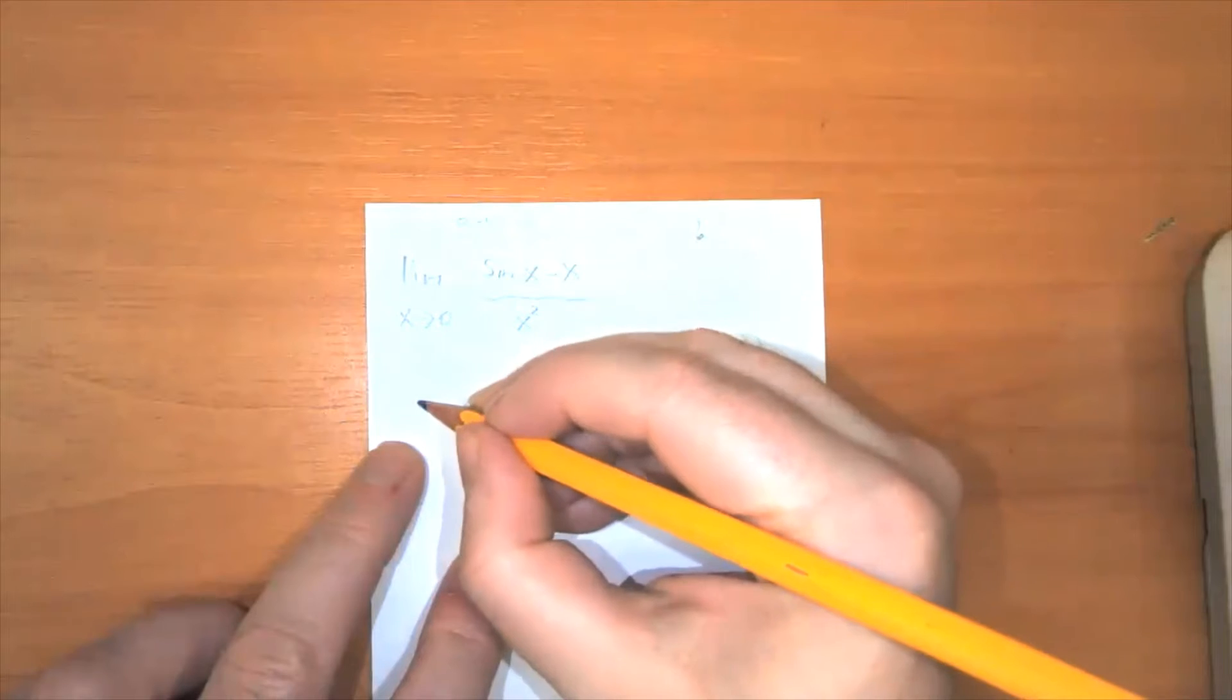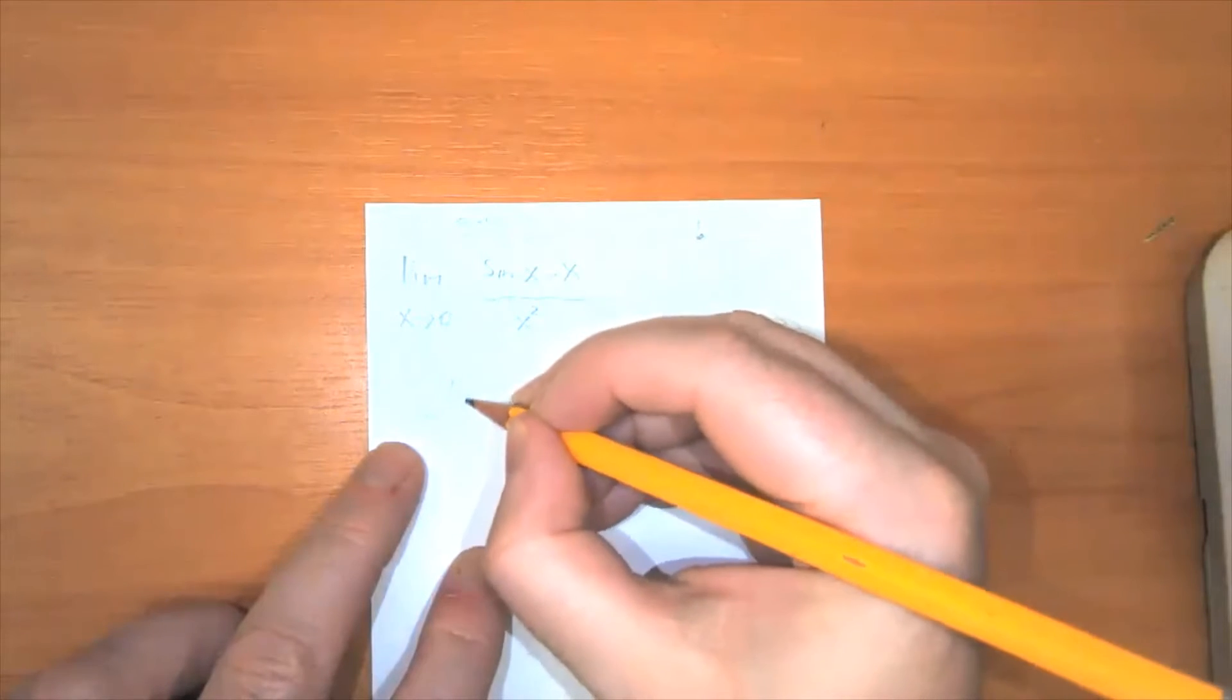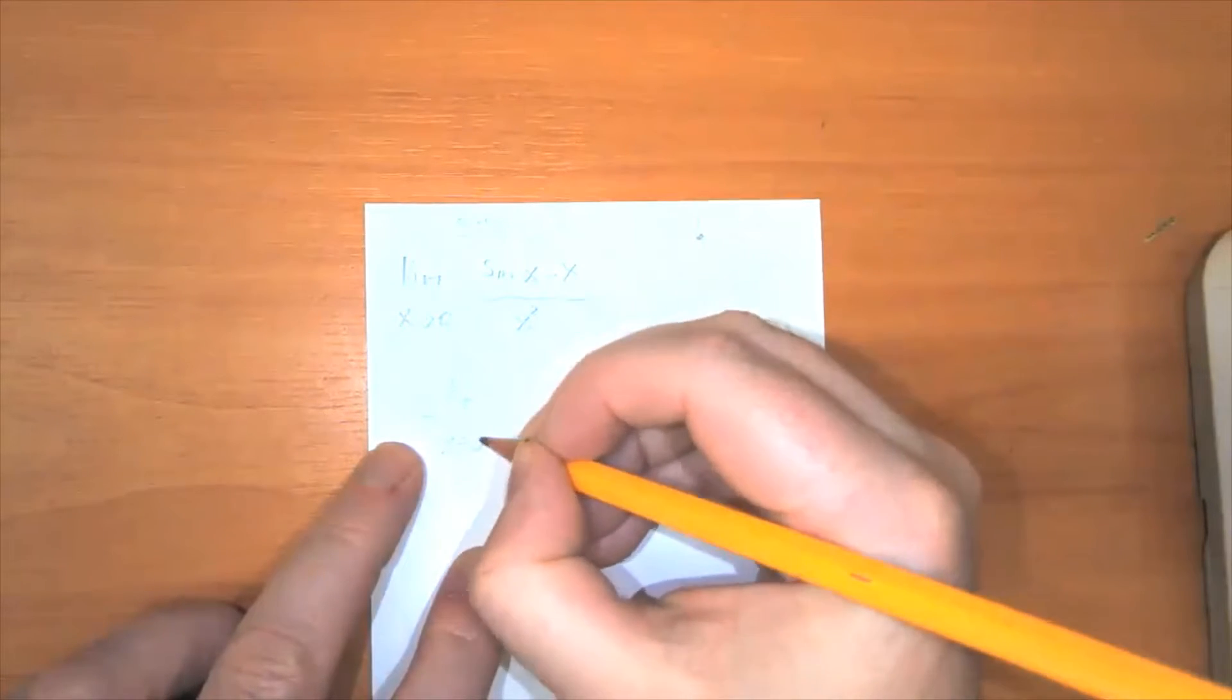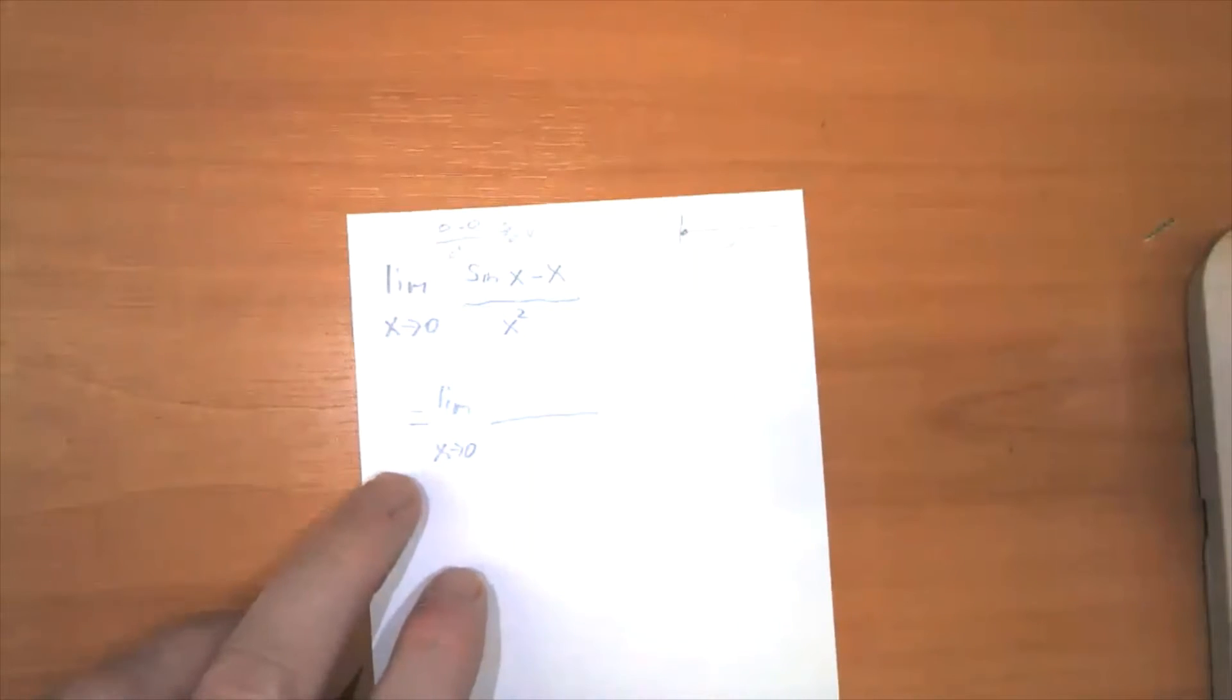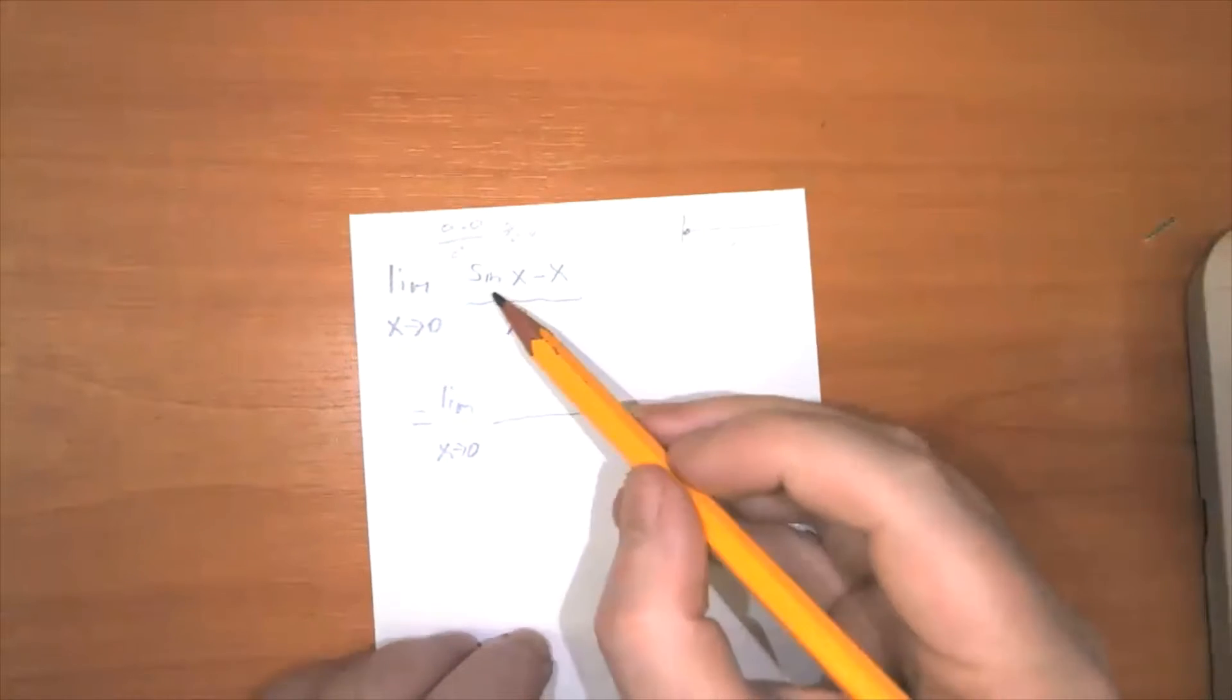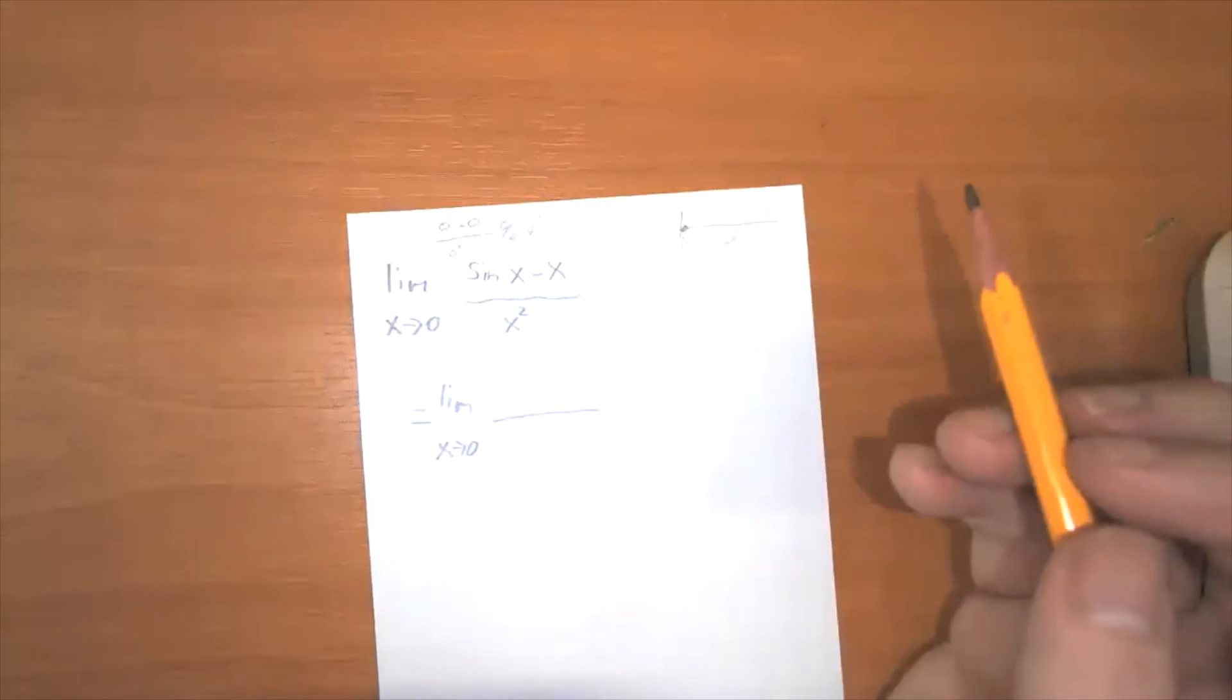So this is saying that this is equal to the limit as x approaches zero of the derivative of the numerator over the derivative of the denominator. So what's the derivative of sine of x minus x?